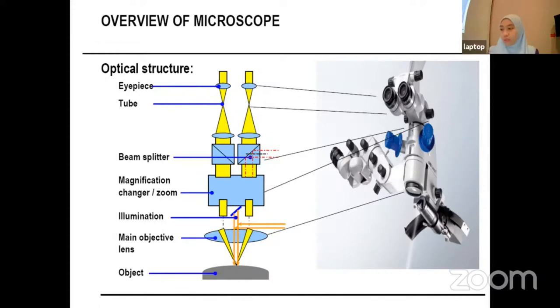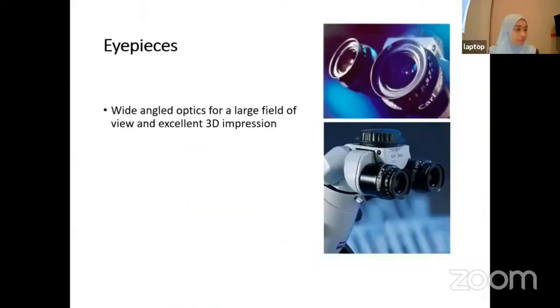In the optical structure, we have the eyepiece (IP) lenses, the beam splitter, the magnification changer, the illumination system, and also the objective lens.